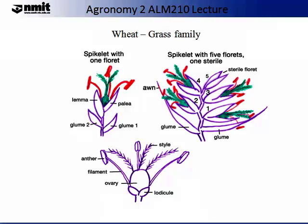From each sterile floret, a grain is produced. In the inflorescence structure, you have an ovary, a filament, an anther, a style and a lodicule. Please become familiar with all of these structures.